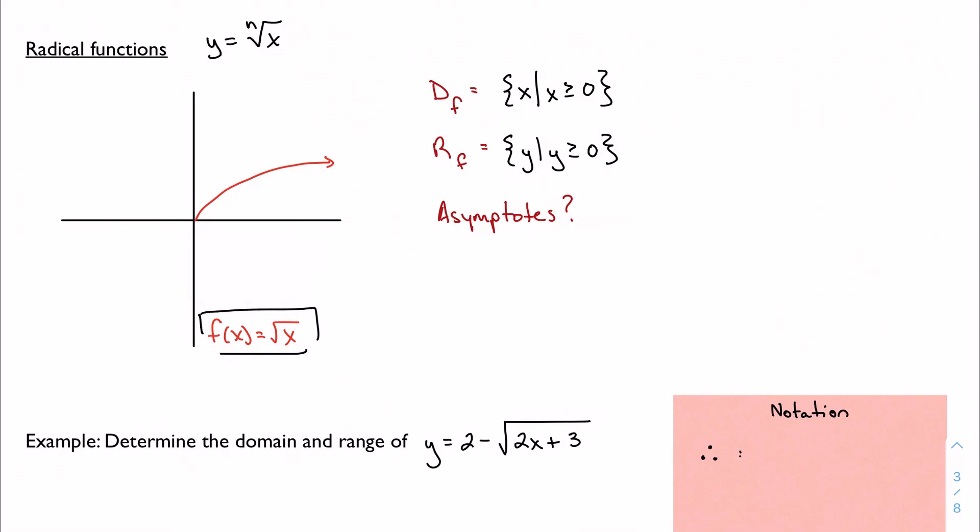There are no asymptotes. The graph just kind of stops right here. It's not approaching it, it doesn't cross it, it just kind of ends. So there are no asymptotes.